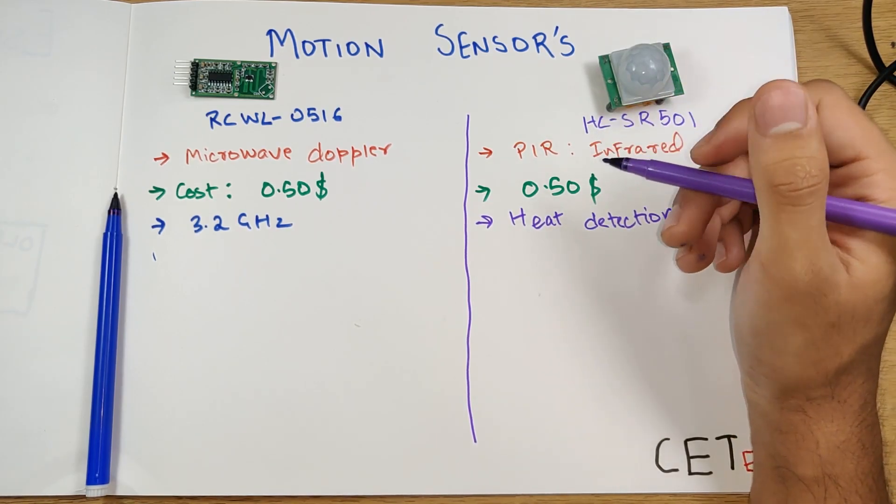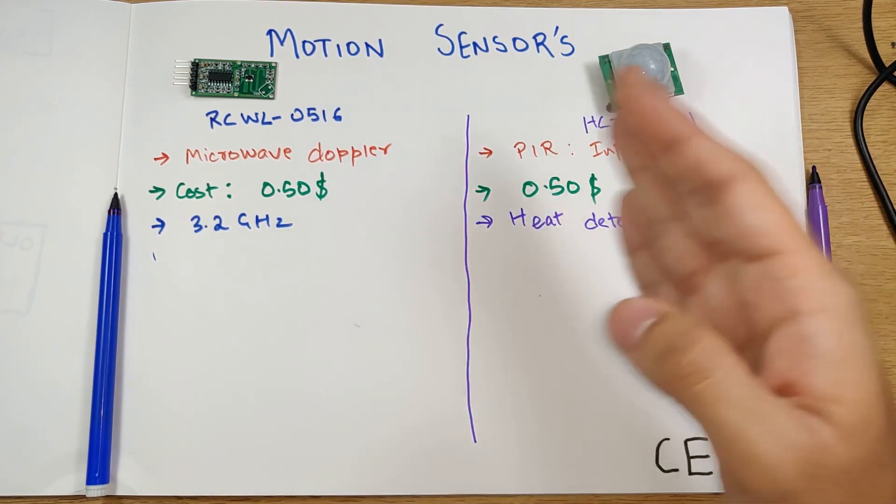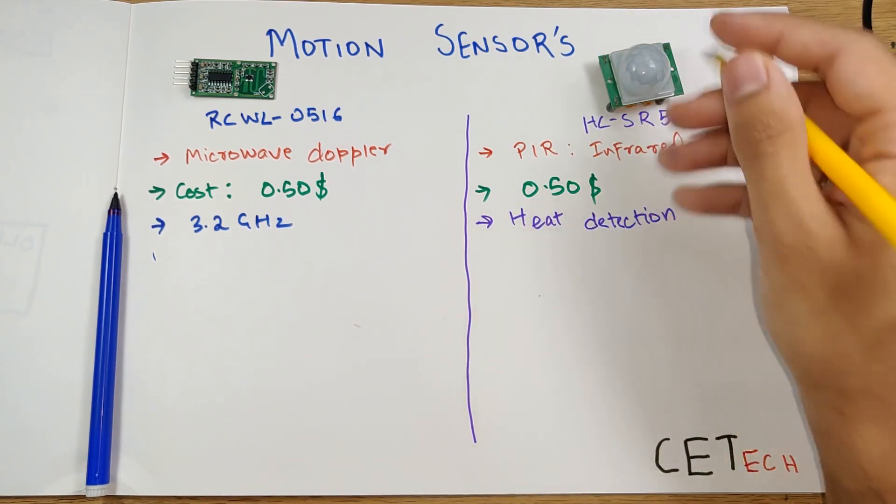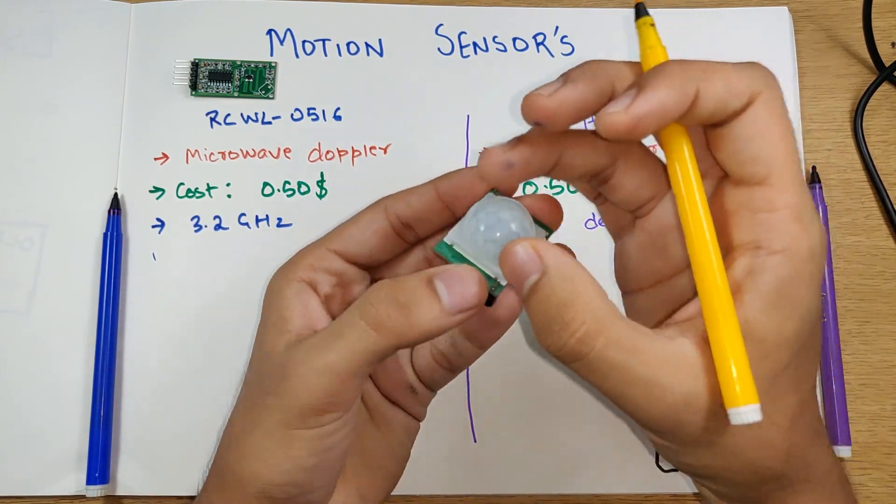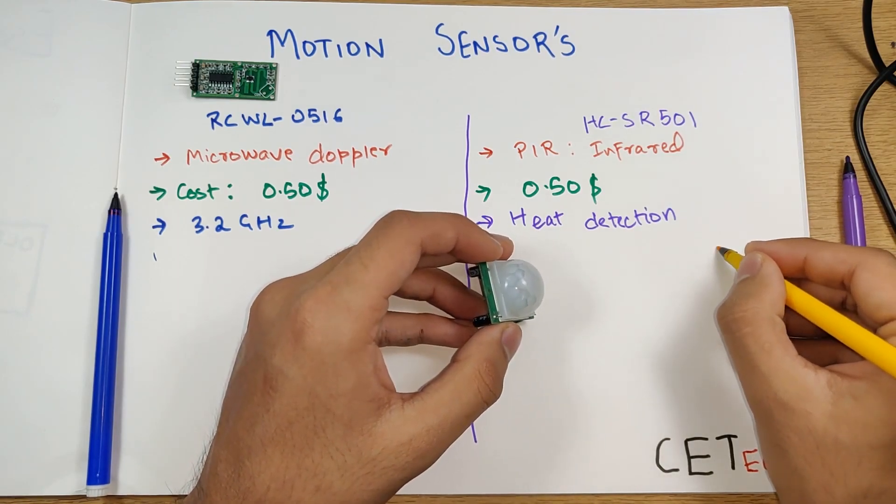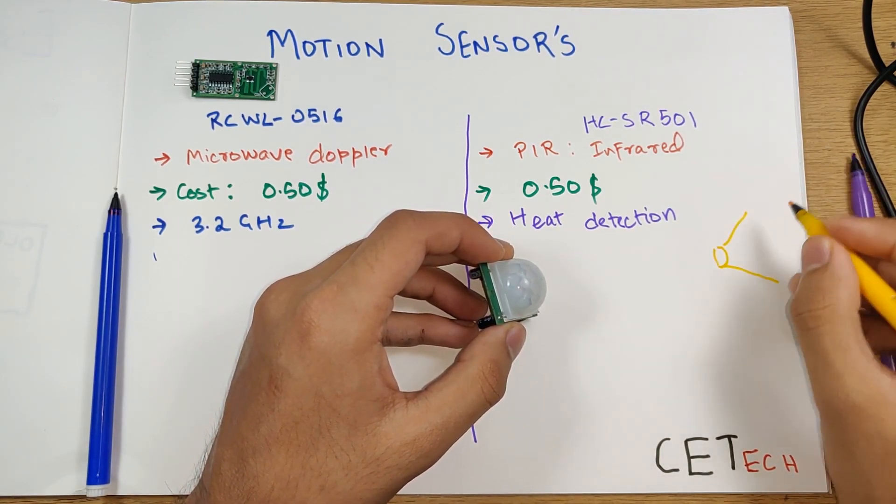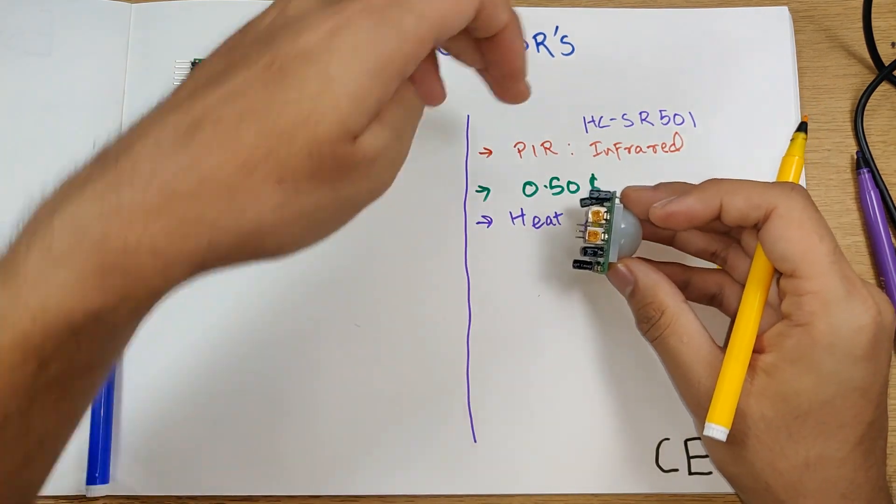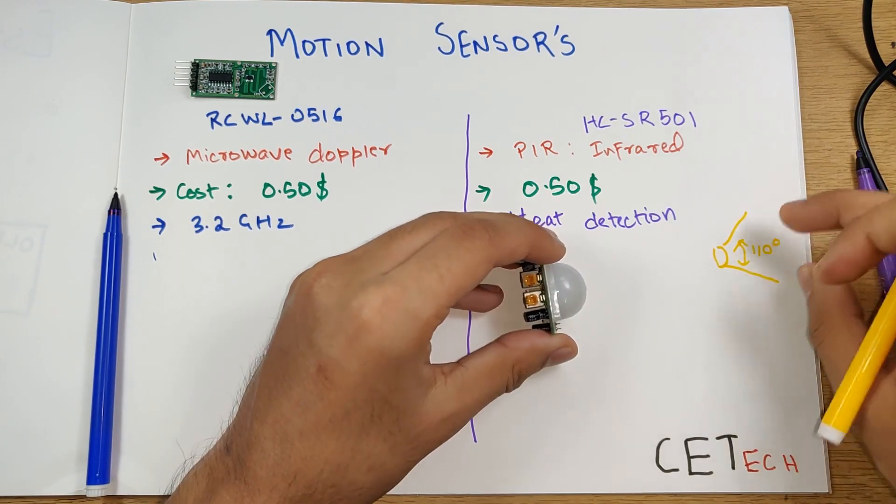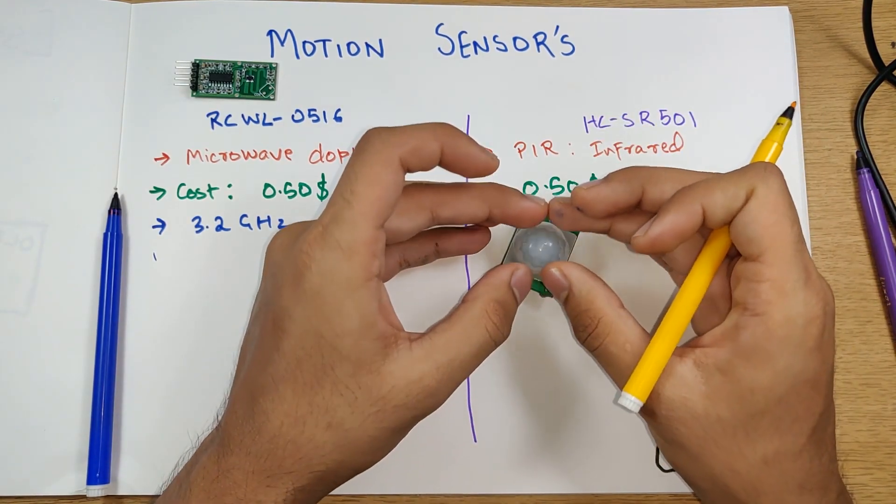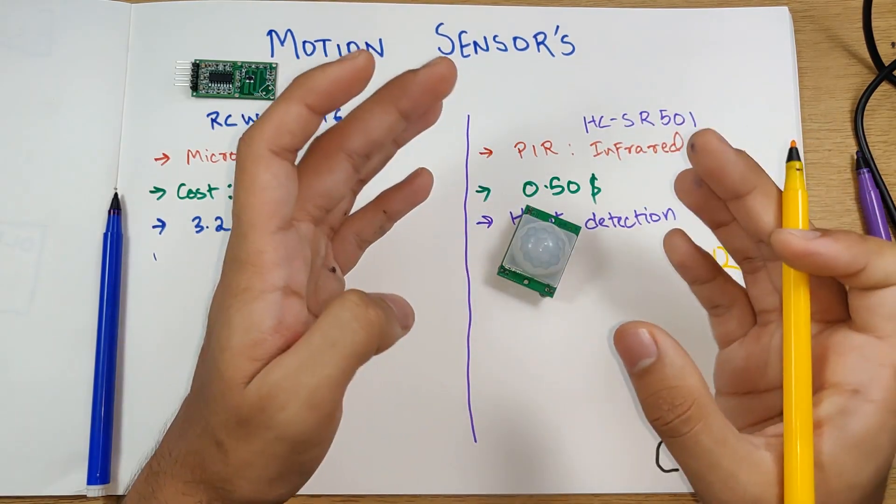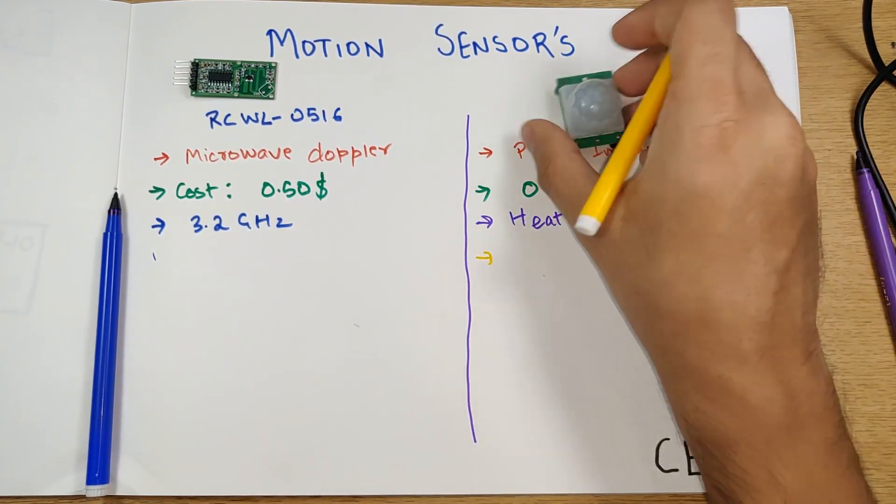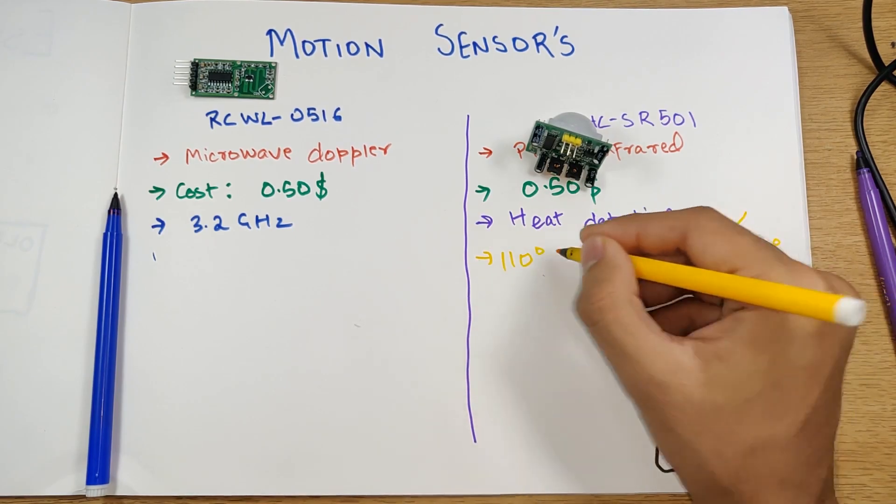One major difference between these two sensors if you see application wise is the range that it covers or the direction that you can cover. This infrared sensor can only view it like a cone. If this is the sensor, you can only detect motion in a particular cone and this cone has an angle of around 110 degrees. If there's motion happening somewhere here or here or here, it doesn't get detected. Only the motion in front of it - if you imagine there's this ice cream cone building from it with an angle of 110 degrees - that is the region where you can detect the motion. The angle of detection or the angle that this can cover is around 110 degrees.